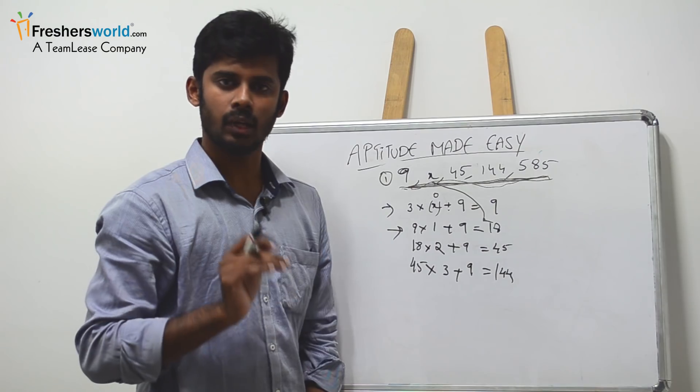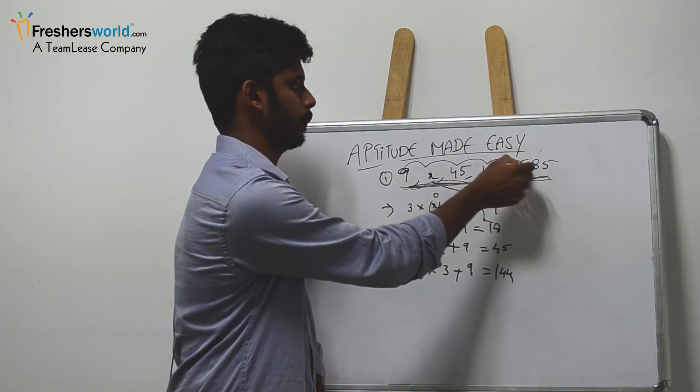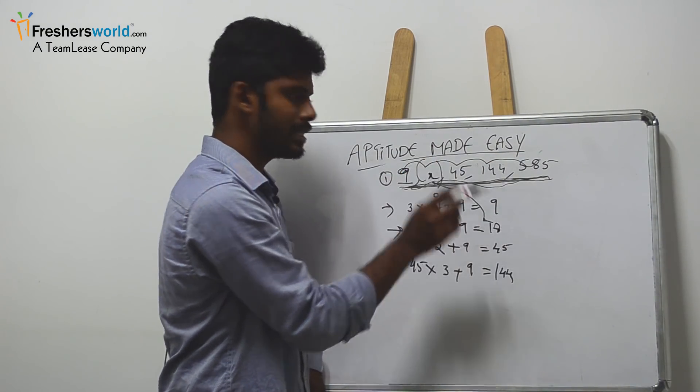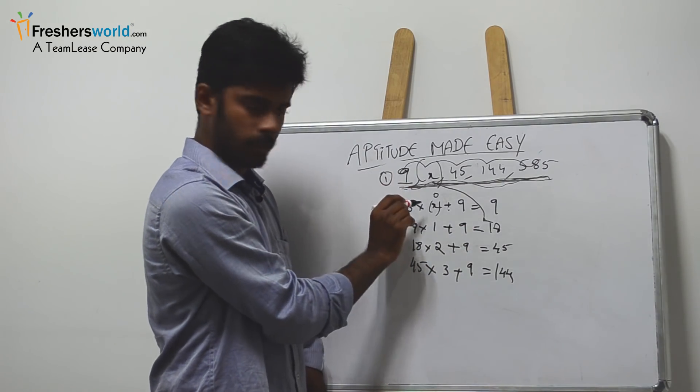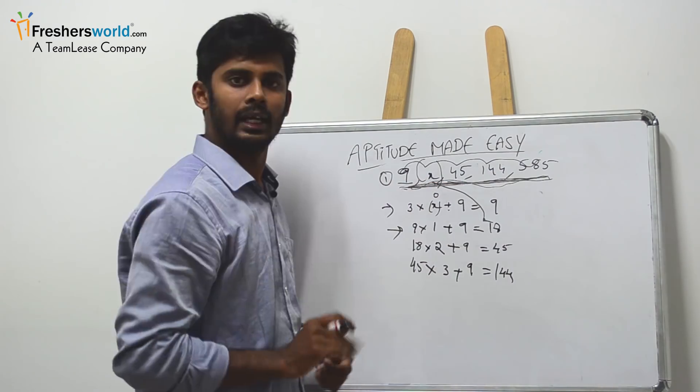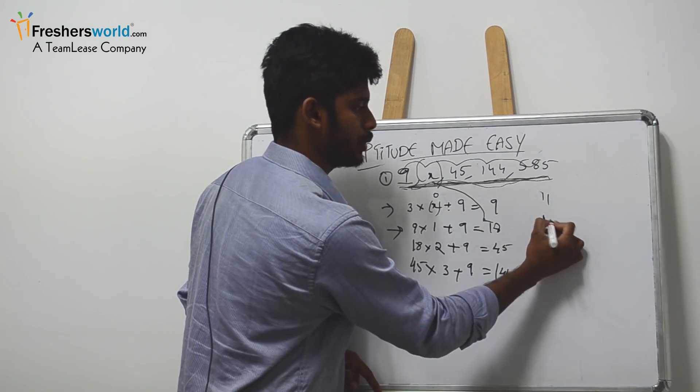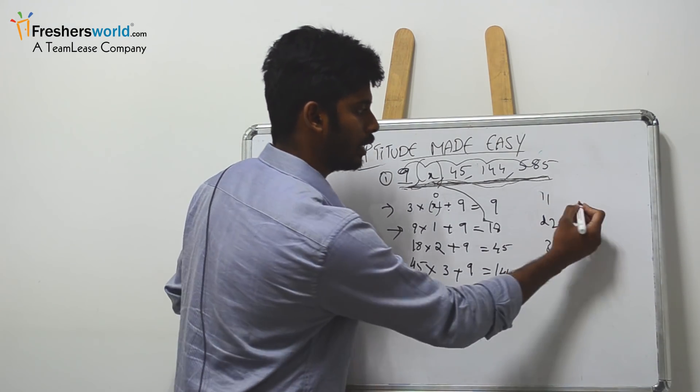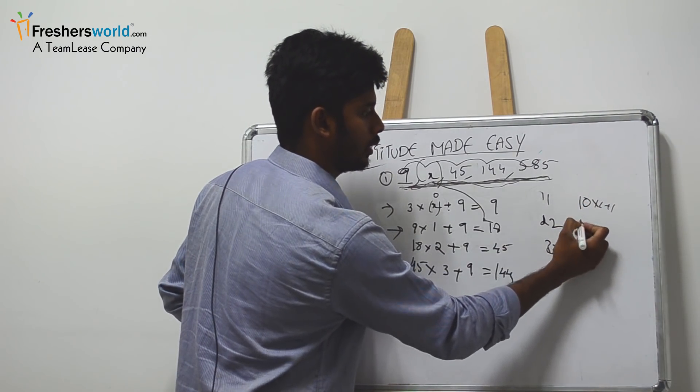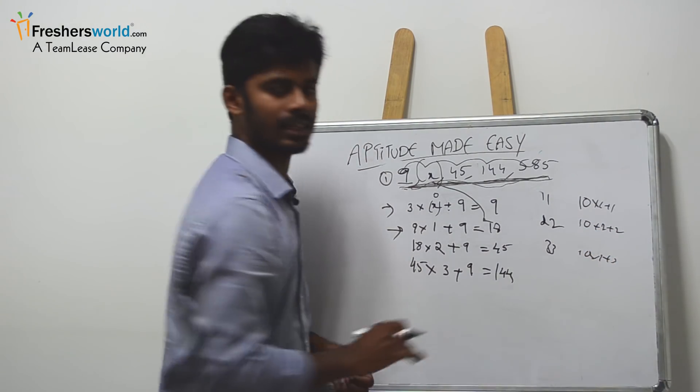When you get this kind of number series in general, try to figure it out in an equation which is a multiple of these numbers. Try to see which is a common number that is directly a multiple of these numbers or around them. In some cases they'll also give like 11, 22, 33, which could be 10 times 1 plus 1, 10 times 2 plus 2, 10 times 3 plus 3. Just try to figure out how these numbers are matching to a table of one particular number.